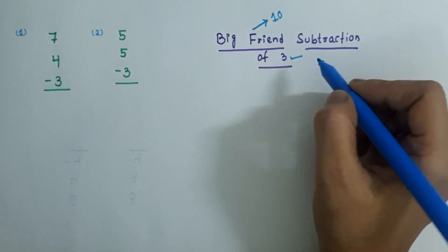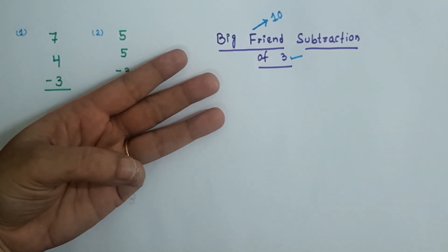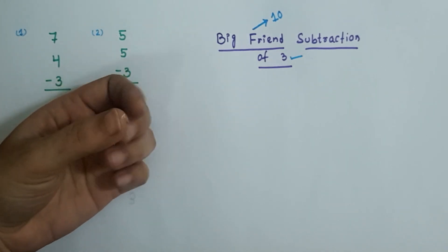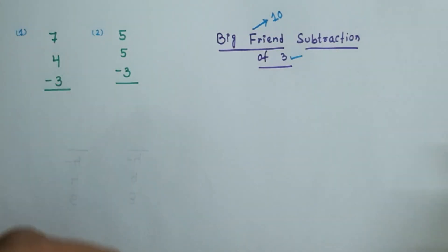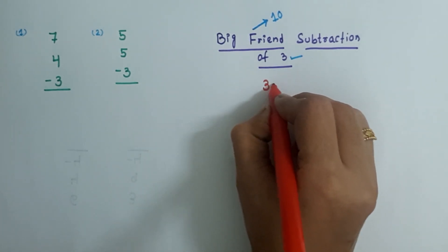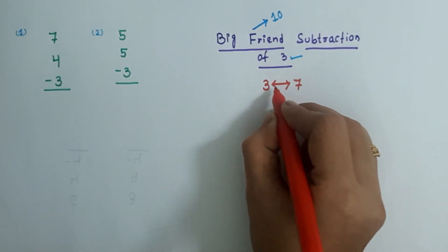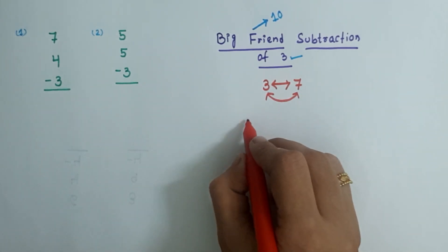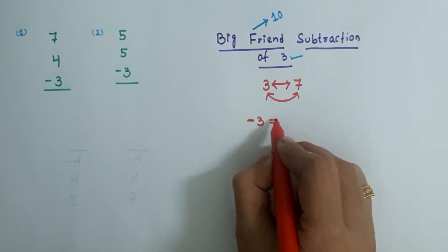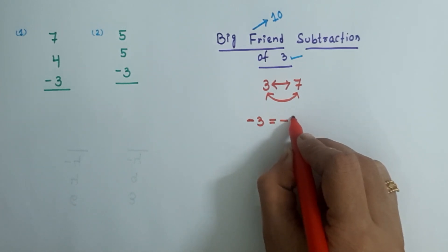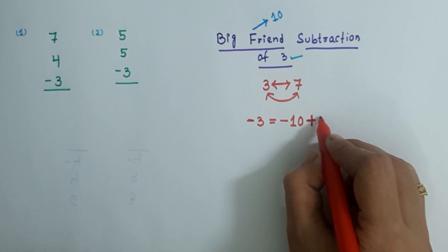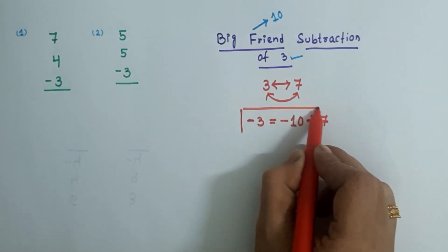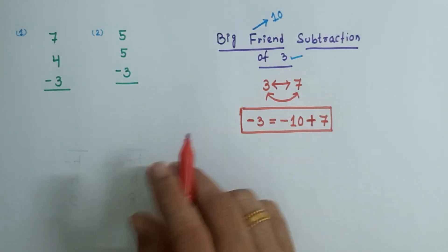Now let us find the big friend of 3. See here I have 3 fingers — how many more fingers do I need to make 10? I need 7 more fingers. So 3 and 7 are big friends to each other. The big friend of 3 is 7, and 7 is also the big friend of 3. Now I am going to write the formula for big friend subtraction of 3: minus 3 equals minus 10 plus 7. We subtract the base value of the big friend which is 10, then add the big friend of 3 which is 7. So minus 3 equals minus 10 plus 7. This is our formula and we will apply it to solve both sums.